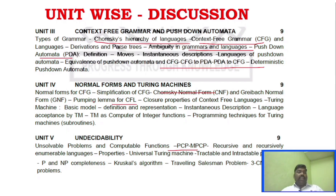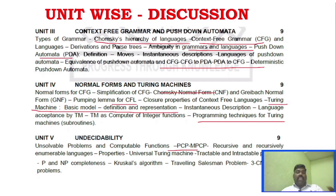Unit 4: Turing machine is the first thing. Turing machine programming is important. Also CFG, CNF conversions are in Unit 4. Unit 5 covers P and NP completeness, universal Turing machine, tractable and intractable problems, and recursive and non-recursive languages.